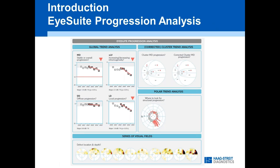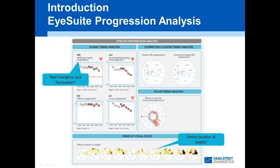Here's an overview of what the iSuite software offers for progression analysis. First, we still show the series because that gives us information about where the defect is and how deep it is — very important for how aggressive your treatment needs to be. Then on the top left, we look at mean defect change to ask: is there real change or just fluctuation? This also answers the speed of change. Then we look at whether the change is diffuse or local, and we have cluster and polar trend analysis.